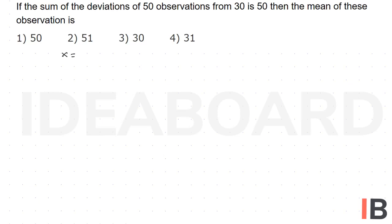Let the variable x equal x1, x2, and so on to x50. The number of observations is given as 50, so n equals 50.